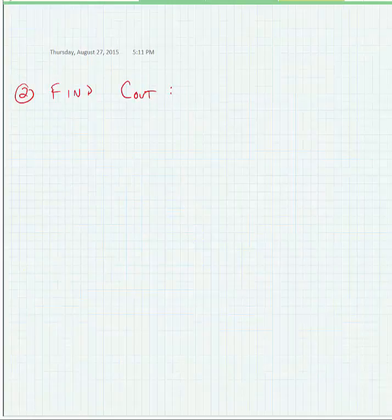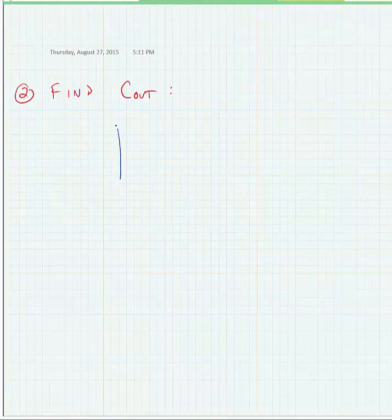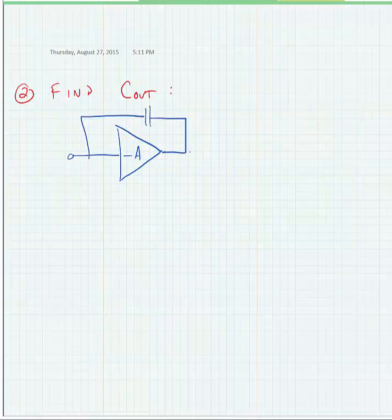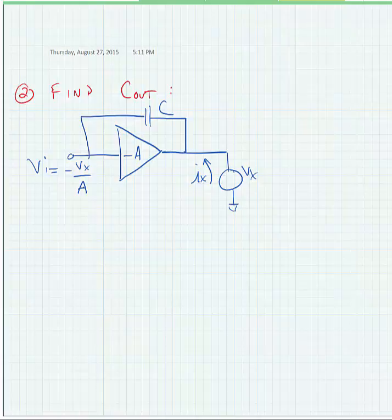Now, let's go to the output and see what the capacitance looks like from the perspective of the output. So, here, we have the same idea. We're going to put a test voltage source and measure the current flowing from it at the output this time. Now, we know that the input has to be equal to minus Vx divided by A. We're just dividing by the gain of the amplifier to go back to the input.